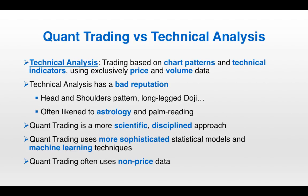To conclude, let's compare quant trading versus technical analysis. Technical analysis is a very common trading method among retail traders and uses chart patterns and technical indicators based exclusively on price and volume data. The moving average cross could be considered both a quant and a technical analysis strategy, but technical analysis in general has a bad reputation — with patterns like the head-and-shoulders or long-legged doji, it has been likened to astrology and palm reading. The key difference is that quant trading is scientific and disciplined: it uses sophisticated statistical models and machine learning, and you must verify that a pattern is actually real. Technical analysis stops a step short of that rigor, and quant trading often uses non-price data, whereas technical analysis is exclusively price-based.